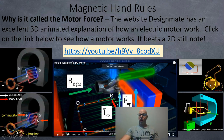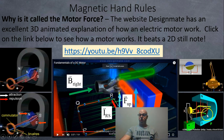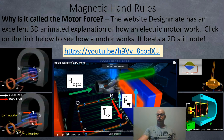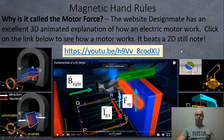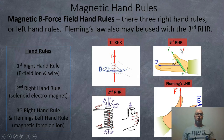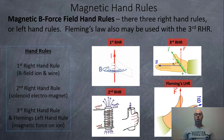Here are a few more animations of electric motors. Also worth looking up is how a rail gun works — it also uses the third right-hand rule and a nice Lorentz force trick.